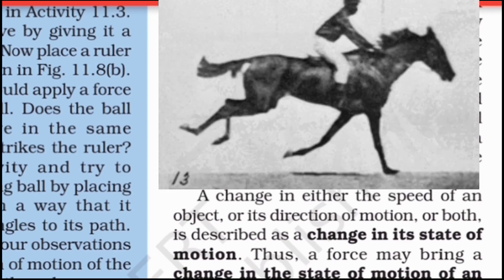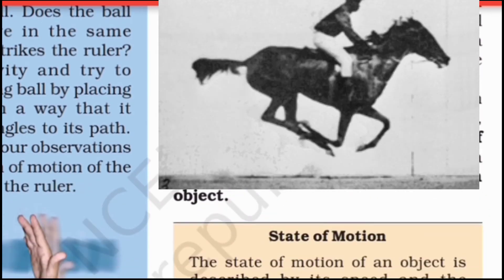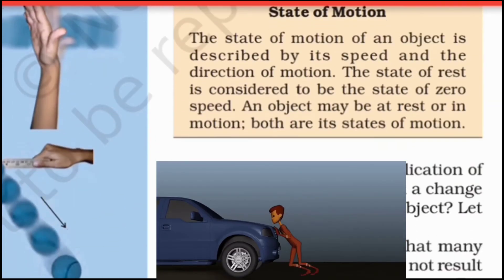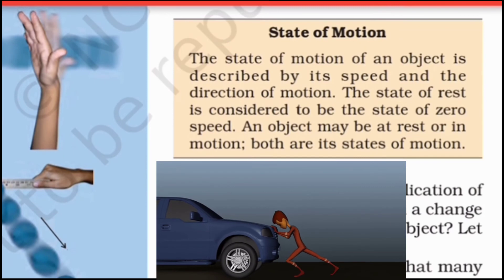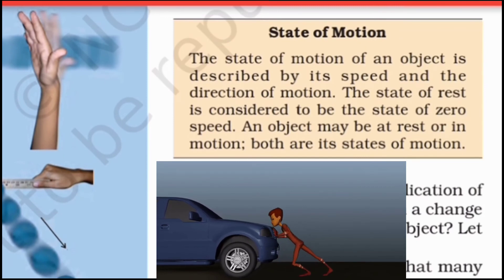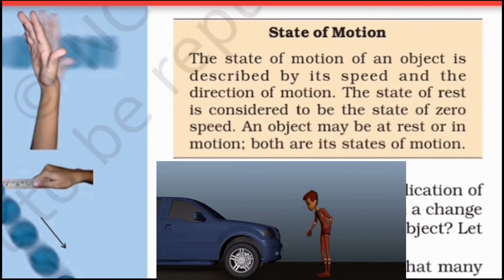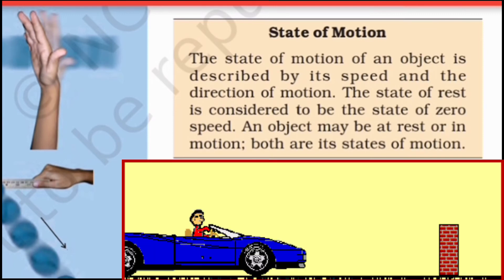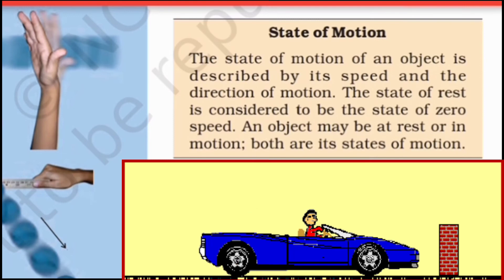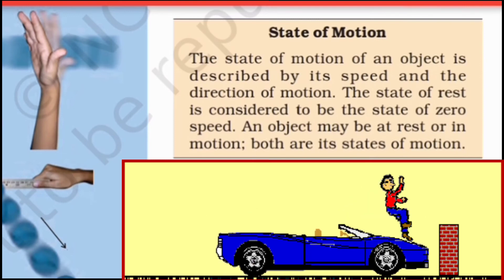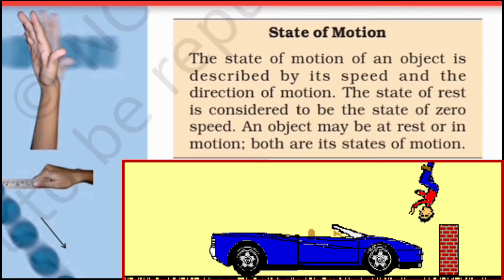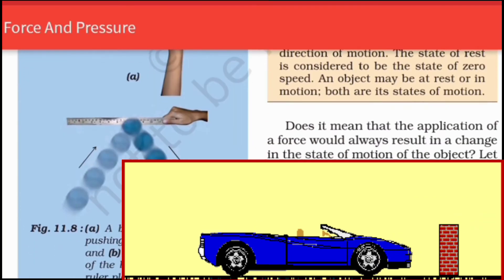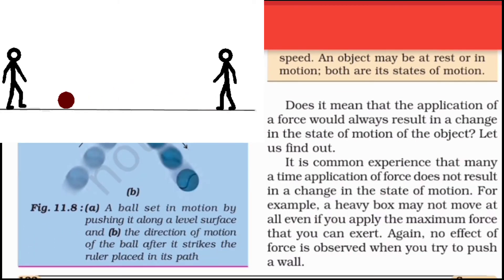A change in either the speed of an object, or its direction of motion, or both, is described as a change in the state of motion. The state of motion of an object is described by its speed and the direction of motion. The state of rest is considered to be the state of zero speed — an object may be at rest or in motion; both are states of motion.